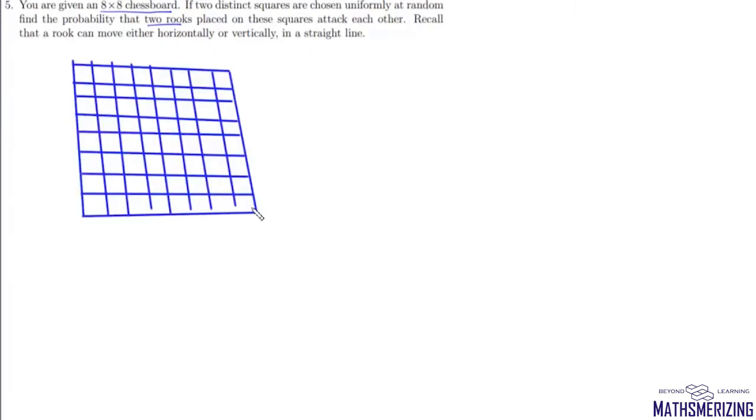We know that a rook can move either horizontally or vertically in a straight line. So we have this 8×8 chessboard and we need to find the probability that these two rooks placed will attack each other. Suppose the event is A, so we need to find probability of event A.